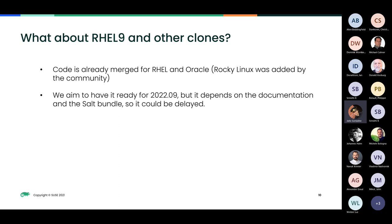About the other EL9 clones: we already have the code merged for Red Hat and Oracle. Rocky Linux was added by the community — thanks again. We aim to have this ready for 2022-09, but as I mentioned, it depends on documentation and the salt bundle, so it could be delayed. We hope that won't be the case.